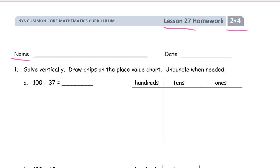We're solving vertically and drawing chips on the place value chart, unbundling only when we have to. Some of these may be easier to solve mentally, but we get to practice the vertical method and drawing the chips. We're really doing both methods, not just figuring out the answer and then writing it down.